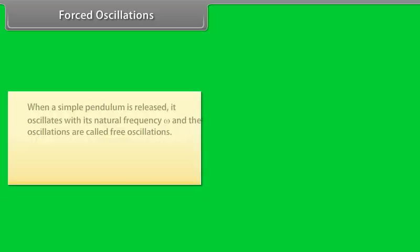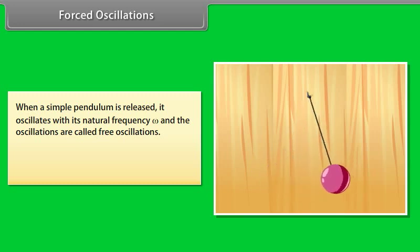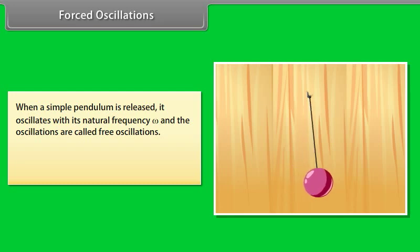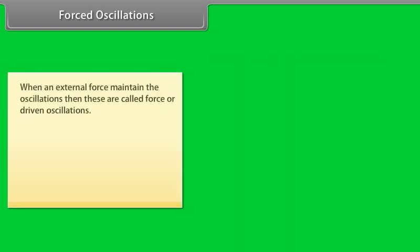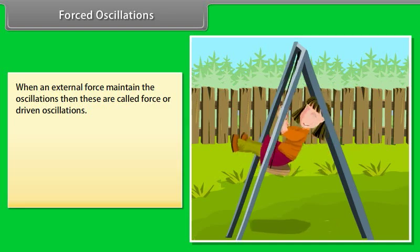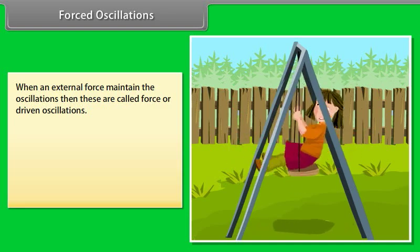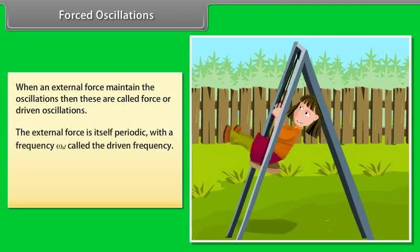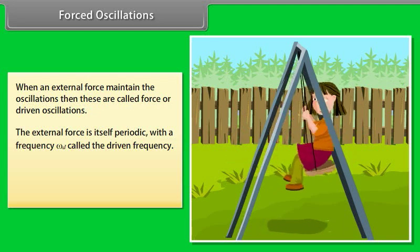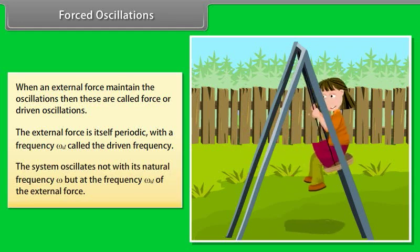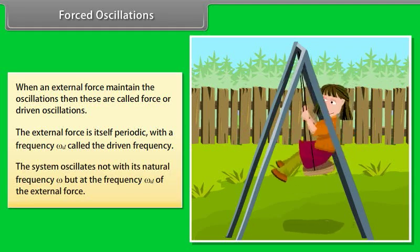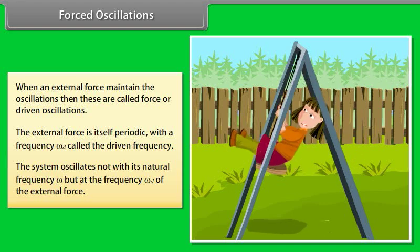Forced oscillations: when a simple pendulum is released, it oscillates with its natural frequency ω, and these oscillations are called free oscillations. All free oscillations eventually die out due to ever-present damping forces. When an external periodic force maintains the oscillations, these are called forced or driven oscillations. The external force has frequency ωd, called the driven frequency, and the system oscillates at ωd rather than its natural frequency ω.